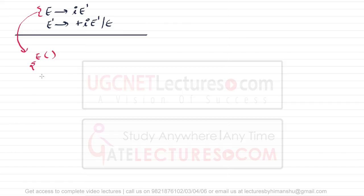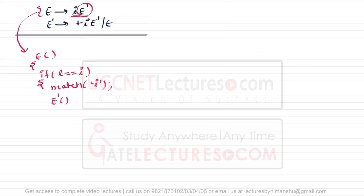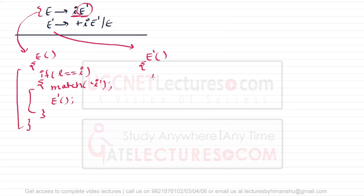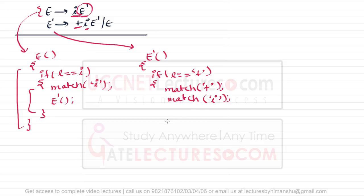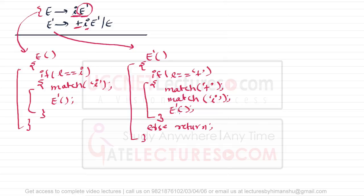For every single production we write a function. For production E, we write a function E: if the lookahead symbol l equals i, then we match i and call E-dash, because the next symbol is E-dash. For the second production E-dash, we write: if the lookahead symbol l equals plus — because the first symbol here is plus, a terminal — we match plus, then match i, then call E-dash again recursively. Else we return.